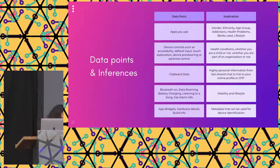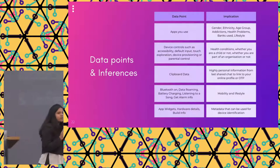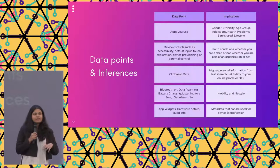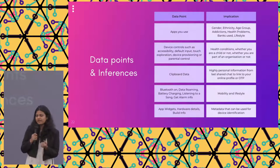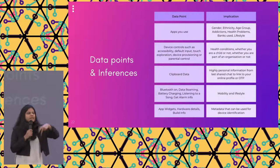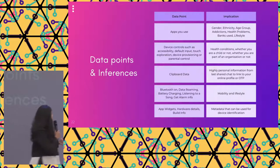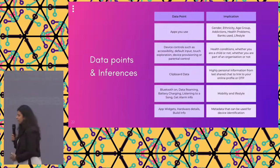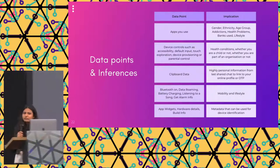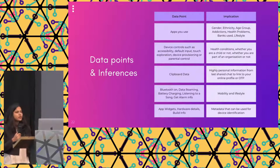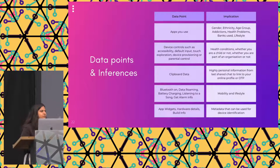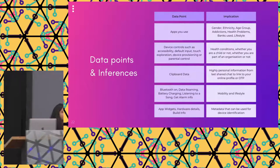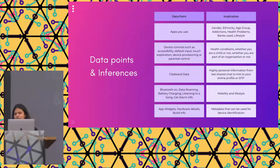Why does it matter? In privacy, we say these are just data points and system settings. But if you put a human behind these data points, you can easily make inferences. There has been research showing that just based on the apps you use, you can determine gender, ethnicity, age group, addictions, or health problems. Banking apps tell you which bank someone uses; lifestyle apps show where they shop. There's an app for everything, so app names indicate preferences and life choices.